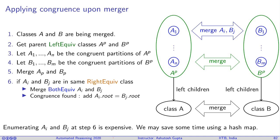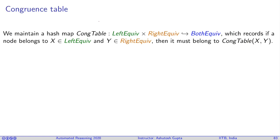You might think that enumerating A1 to An and B1 to Bm is expensive — quadratic or worse. We can reduce this to linear using hash functions. We maintain something called a congruence table. It tells you: given a child in the left-equi class and a child in the right-equi class, where to go to find the both-equi class. This congruence table helps us cut down the time.